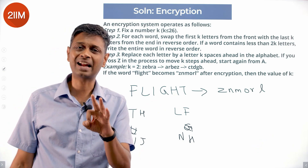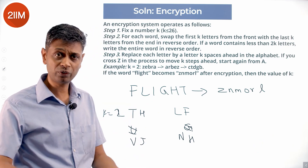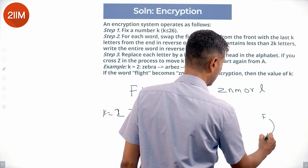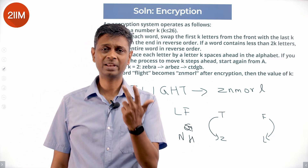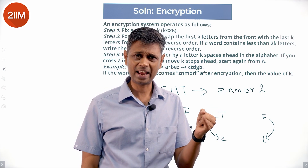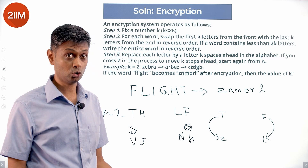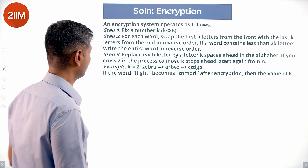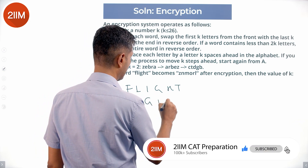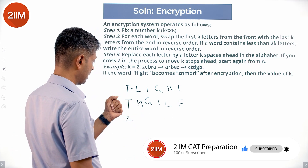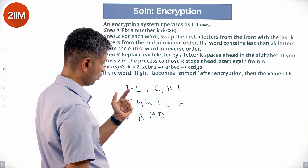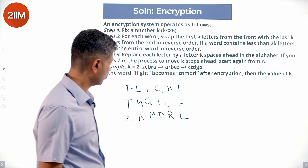We know F goes to the end and T goes to the front after step one. Counting positions shifted: from T to Z is 6 steps, and from F to L is also 6 steps — G H I J K L, that's the 6th letter. So if k were 6, this could work. Plugging in k=6: F-L-I-G-H-T maps via step one to T-H-G-I-L-F, then step two shifts each by 6 — giving Z-N-M-O-R-L. K equal to 6 works perfectly.